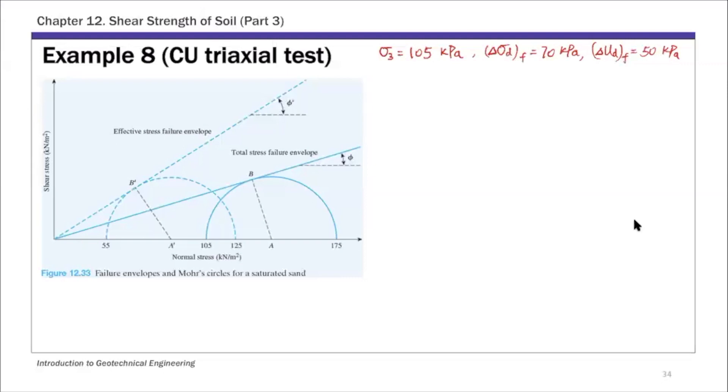For these principal stress values, let's first calculate sigma 3 prime, the effective minor principal stress. That's total minus pore water pressure: 105 minus 50, which equals 55 kPa.